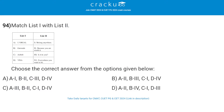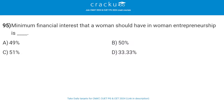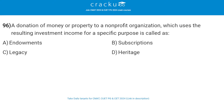Match the following: in list 1 we have companies and in list 2 we have taglines. For L'Oreal, the tagline is Because you are worth it. For Gatorade, the tagline is Is it in you? For Airbnb, the tagline is Belong anywhere. And for Visa, the tagline is Everywhere you want to be. So the answer is Option B. Minimum financial interest that a woman should have in women entrepreneurship is 51%. A donation of money or property to a non-profit organization which uses the resulting investment income for a specific purpose is called an endowment.